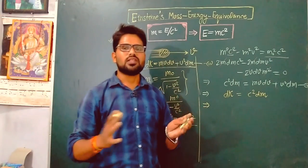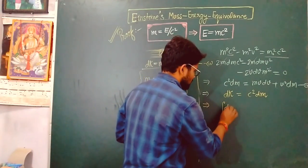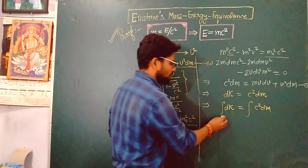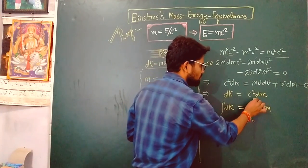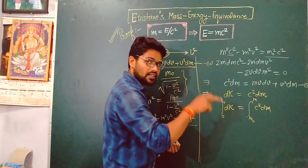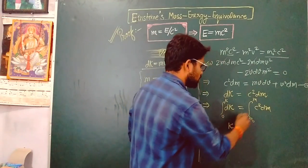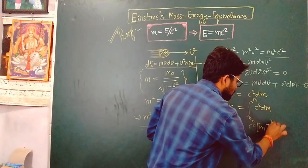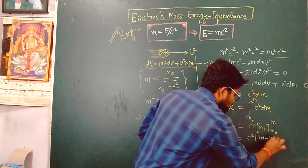To find the total kinetic energy, integrate both sides: integrate dK equals integrate c²·dm. When the object is at rest, kinetic energy is zero and mass is m₀; when moving with velocity v, kinetic energy is K and mass is m. So K equals c² times (m minus m₀).